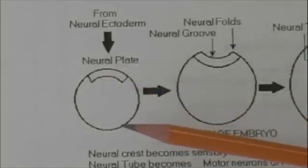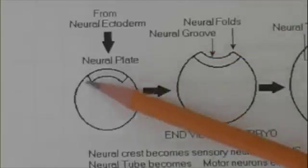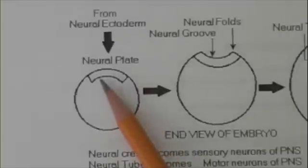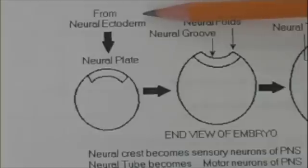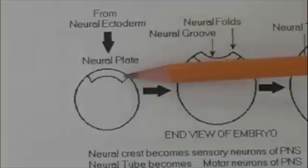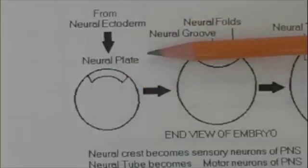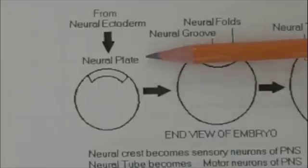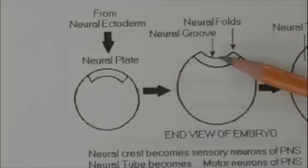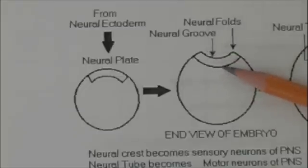Now the outer embryonic tissue is called ectoderm, and on the dorsal side, the back side of the embryo arising from neural ectoderm, is a plate of cells called the neural plate. Very quickly after that forms, it begins to fold in the middle. The fold is called the neural groove and the edges of it, the neural folds.